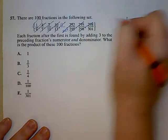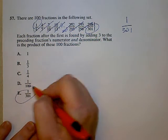So the only number left on top is a 1. The only number left on the bottom is a 301. Answer is E.